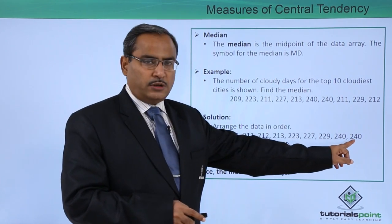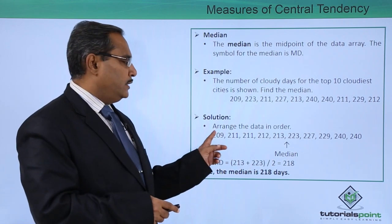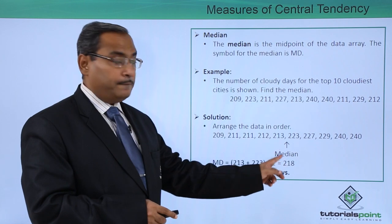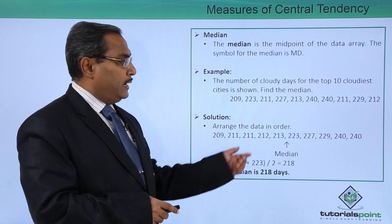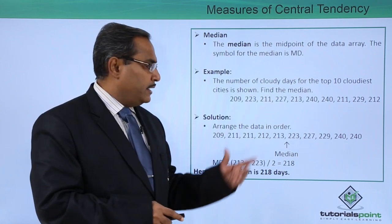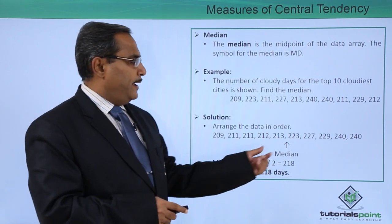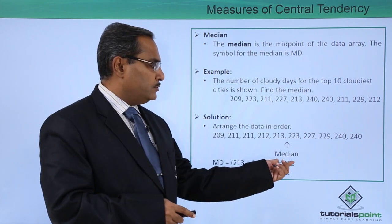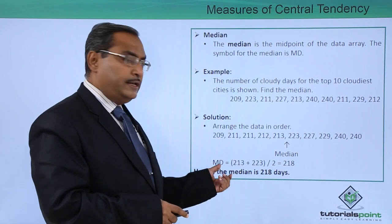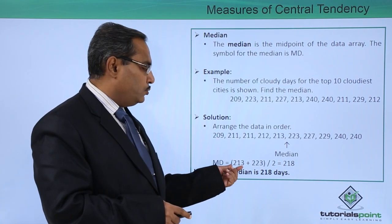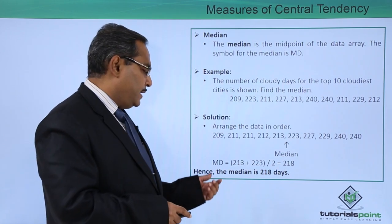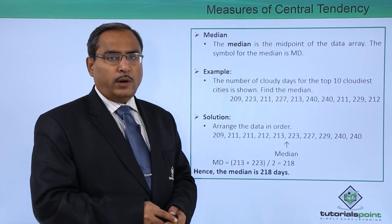Here we have 10 such data points. Since 10 is even, we consider the two middle values and calculate the median as their average. So the median MD = (213 + 223) / 2 = 218. Hence the median is 218 days.